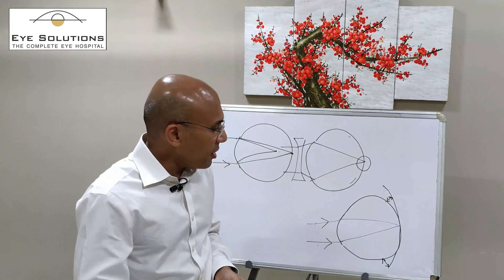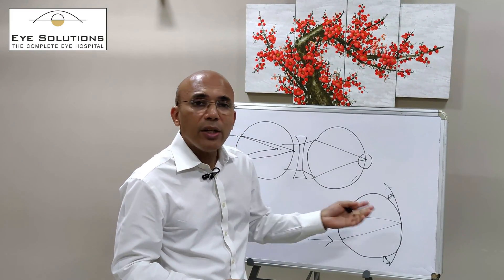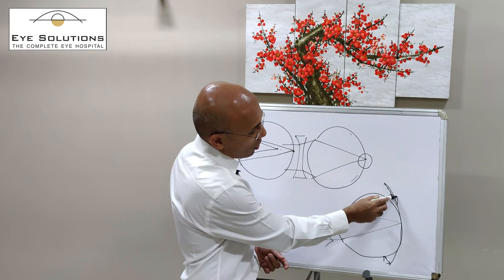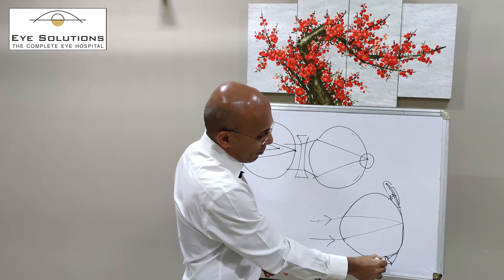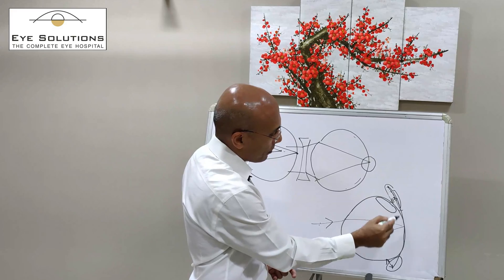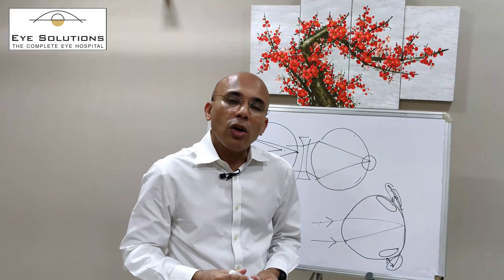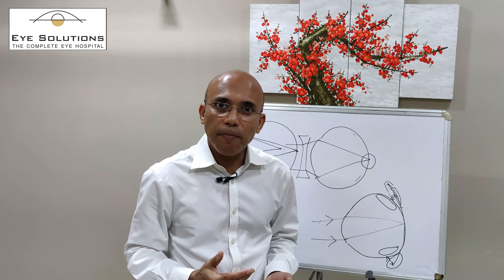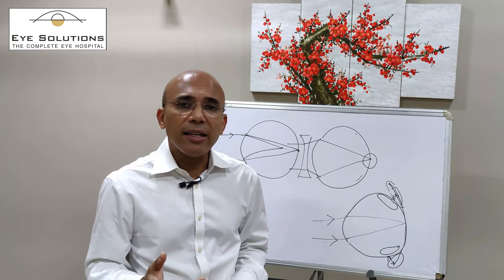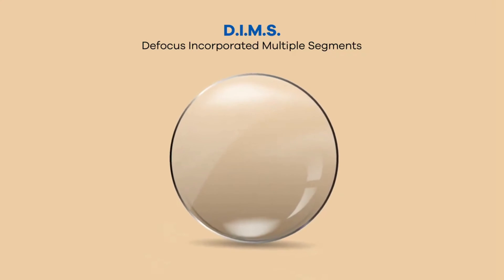The new glasses based on DIMS technology work by causing the peripheral rays of light to start focusing in front of where they normally would, creating what is known as a myopic defocus. These lenses are not made like traditional lenses — they have two zones: a central zone and a peripheral zone.